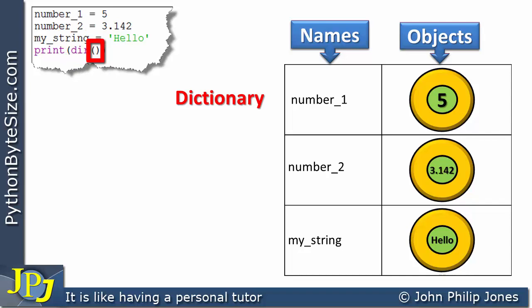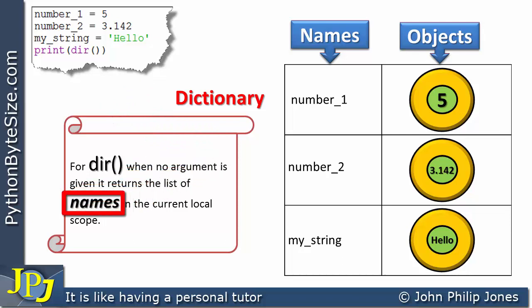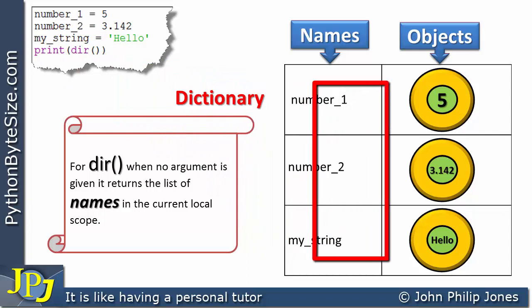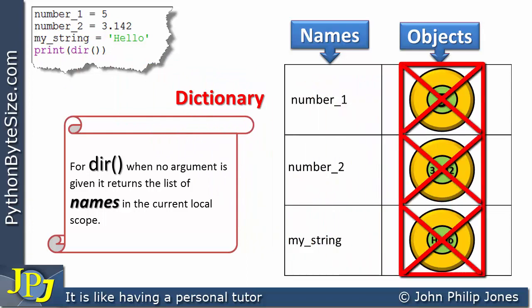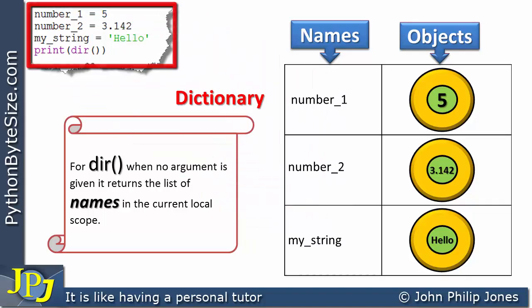It is normal to pass something into the function if you wanted, for instance, to know what the attributes of a class were — the data attributes and the method attributes. But when you see this function without anything in the brackets, when there is no argument given, it returns the list of the names in the current local scope. So this program statement should return these names. It doesn't return the values or the objects, it just gives us the list of names that exist for the namespace of this computer program.